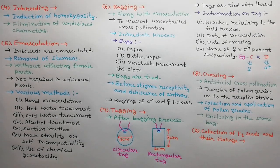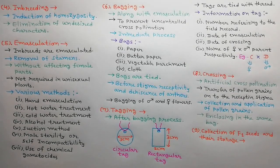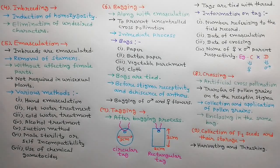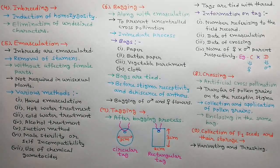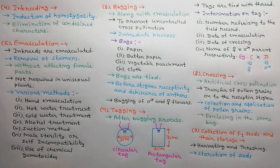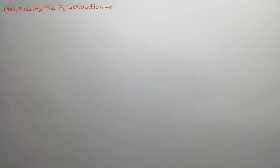The ninth step is collection of F1 seeds and their storage. Crossed heads or pods of desirable plants are harvested and after complete drying they are threshed. Seeds are stored properly with original tags.